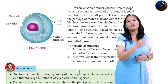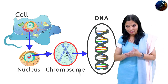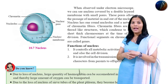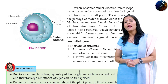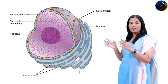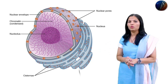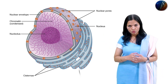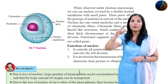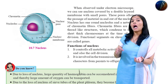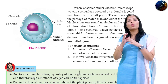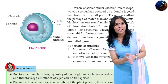Inside the nucleus there are chromatin fibers, which are thread-like structures. These chromatin fibers condense to form short, thick chromosomes at the time of cell division. The nucleus has one round nucleolus and chromatin fibers, and is covered by a double layer membrane with nuclear pores that allow passage of different substances in and out.